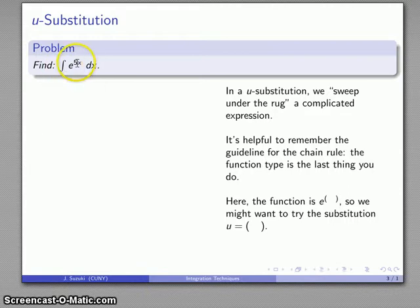So let's take a look at it. This function here, e to the 5x, well, it's actually an e to the something type of function. So the substitution that we might want to try is, well, let's make u equal whatever our something is. And again, we'll apply the kindergarten rule. We'll put everything back where we found it. So we had e to the 5x, and so what I want to do is I want to try u equals 5x as our substitution.